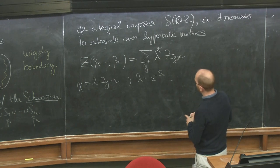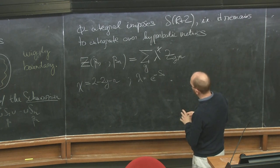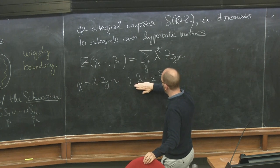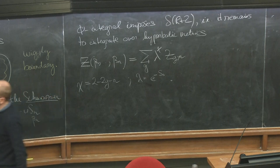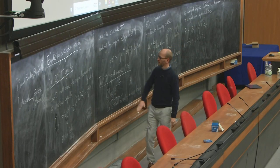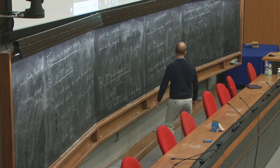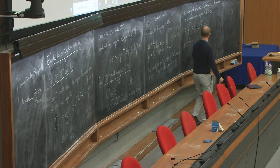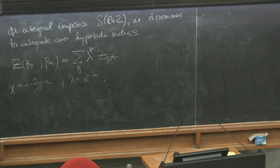From this point of view, this coupling constant lambda, if we were to treat this like a string theory worldsheet, would be what we call the string coupling — parameterized here by e to the minus S_0.